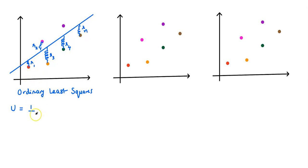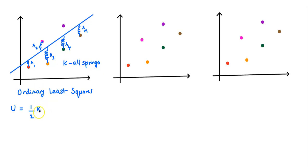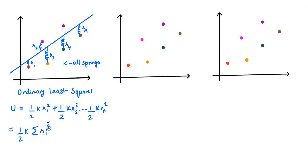The potential energy in the first spring is half k R1 squared, where k is the spring constant. Let's also say that k is the spring constant of all springs — all the springs in this case have the same spring constant k. So the potential energy in the first spring is half k R1 squared, in the second spring is half k R2 squared, and all the way to half k Rn squared, assuming there are N points in the point cloud. This can be written in more compact notation as half k times the sum of Ri squared, where i goes from 1 to N.